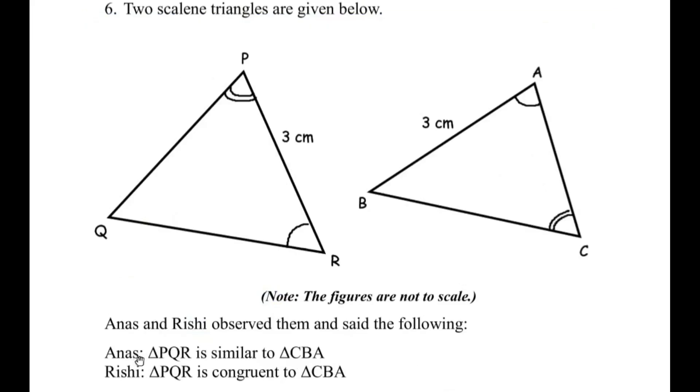Now here Anas says that triangle PQR is similar to triangle CBA. So let us find out whether the two triangles are similar. Now according to the given statement PQR is similar to triangle CBA. That means angle P is similar to angle C. So let us see from the diagrams. You can see the angle P is marked 2 times and angle C is marked 2 times which means these two angles are similar. That is correct.